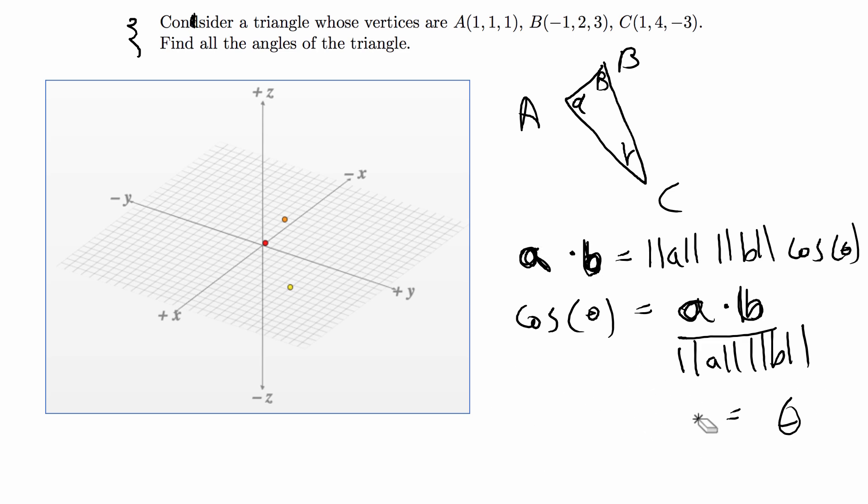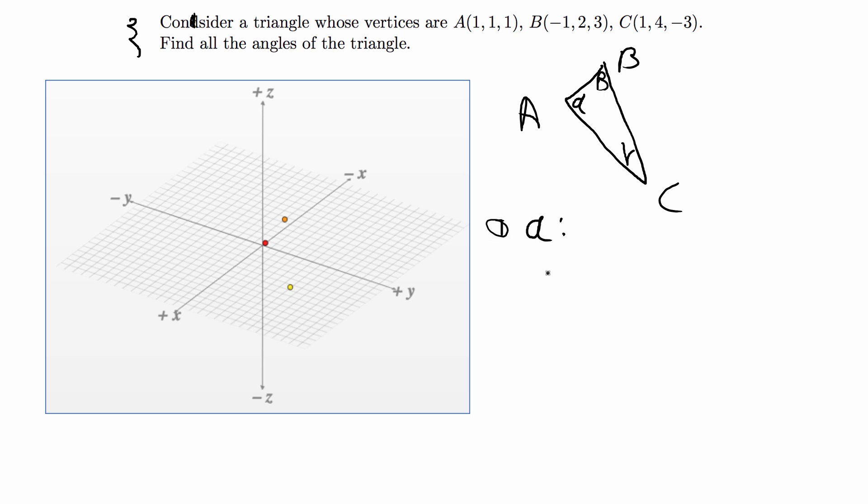So let me go ahead and start with finding alpha. So to find alpha, I'm going to call my a the vector AB which is equal to ⟨-2, 1, 2⟩ and where I'm getting these values is I'm just subtracting either b from a or a from b and it doesn't matter which direction you go in. You just want to be consistent when you're finding it for vector a and vector b. So in this case, I did -1 minus 1, 2 minus 1, and 3 minus 1 to get this vector.